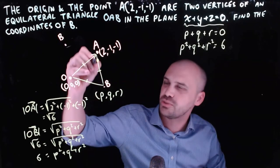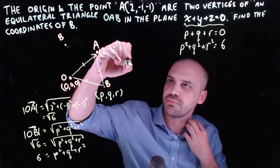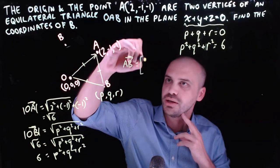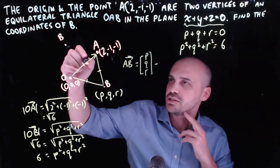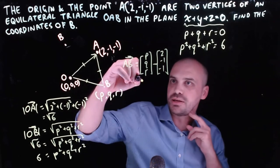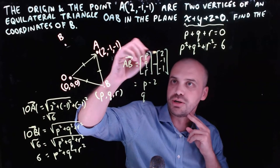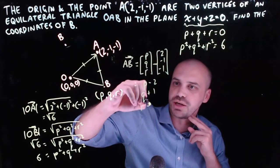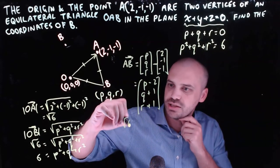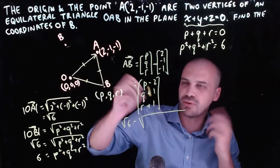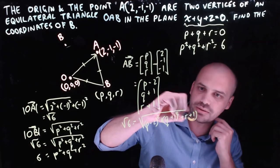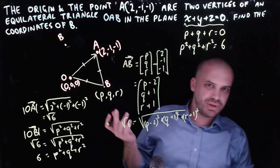Finally I need to work with vector AB — this is the one I've been dreading a bit. Vector AB = OB − OA = (p, q, r) − (2, -1, -1), which gives (p−2, q+1, r+1). The magnitude of AB must also equal √6, so: 6 = (p−2)² + (q+1)² + (r+1)².